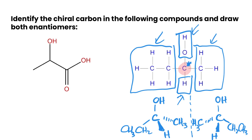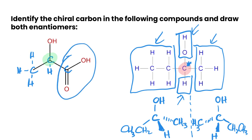Let's look at the next molecule and identify the chiral carbons. The first carbon on the chain has three hydrogens attached, so that's definitely not chiral. Anything with a double bond is not going to be chiral either because it only has three things attached to it — it doesn't fit the definition. The chiral carbon here is the one attached to a carboxyl group, a hydrogen, a methyl group, and a hydroxyl group, so that carbon is chiral.